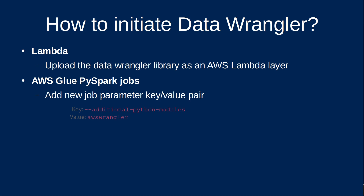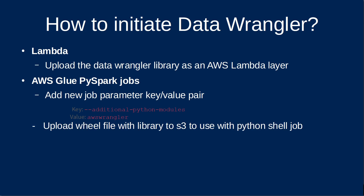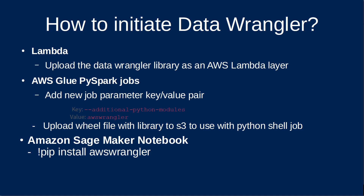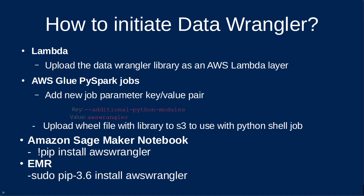For AWS Glue PySpark jobs, all you need to do is add a new job parameter key-value pair of --additional-python-modules with a value of awswrangler. For AWS Glue Python shell jobs, it is slightly more involved — you need to upload a wheel file to an Amazon S3 bucket and then point your job to the wheel file in the Python library path field. To use it in an Amazon SageMaker notebook, simply run pip install awswrangler and you're good to go. For EMR, as long as you configure your EMR cluster for Python 3, it's installed with two lines of code using sudo pip install awswrangler.